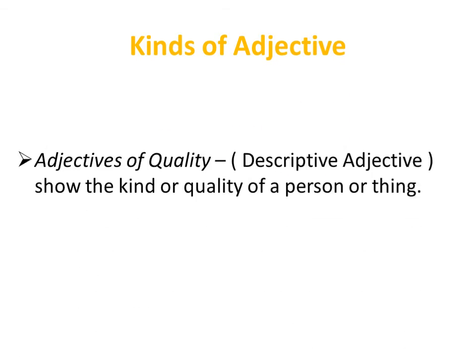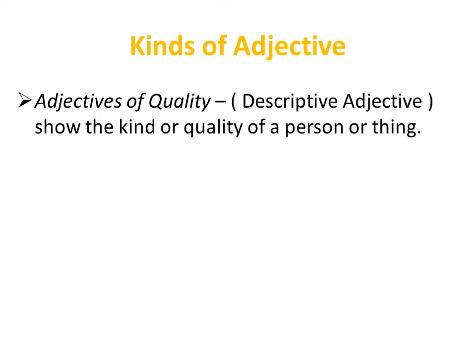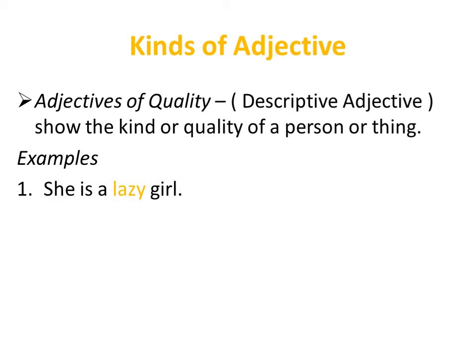Now it's time to learn the kinds of adjective. Number one: Adjectives of Quality. An adjective of quality is a word that tells us the kind or quality of a person or thing. For example, 'She is a lazy girl.' The word 'lazy' is telling us the quality, so it is an adjective.